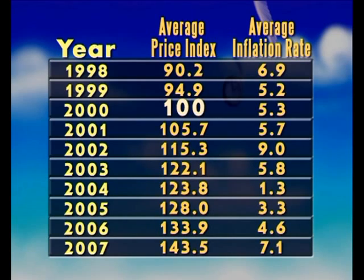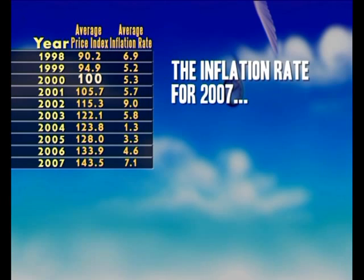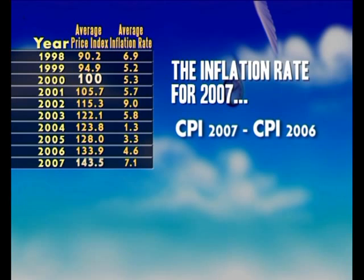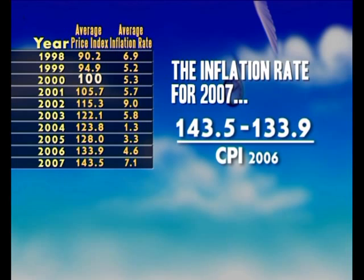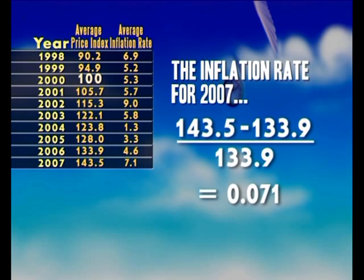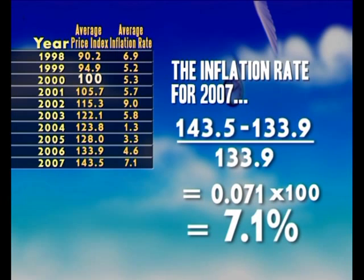Here we have the consumer price index and the yearly inflation rate for the period 1998 to 2007. Note that the base year was the year 2000 and that the price index for that base year is 100. Now, the rate of inflation for the year 2007 is calculated as follows: the CPI for 2007 minus the index for 2006, then dividing by the earlier year, gives us 0.071. Multiplied by 100, we get 7.1%.